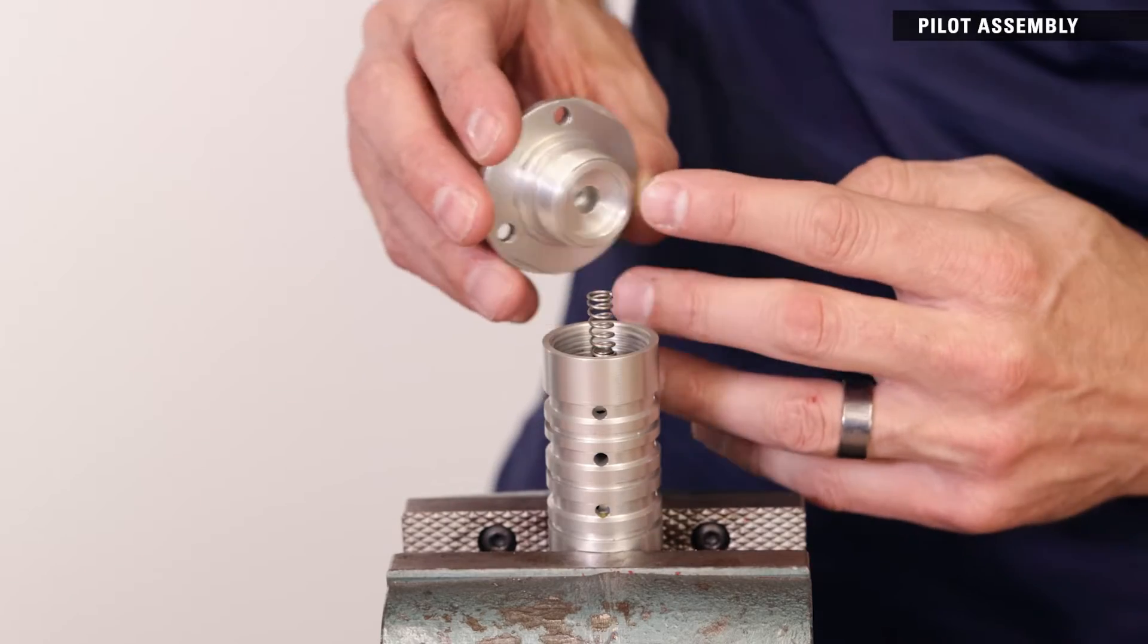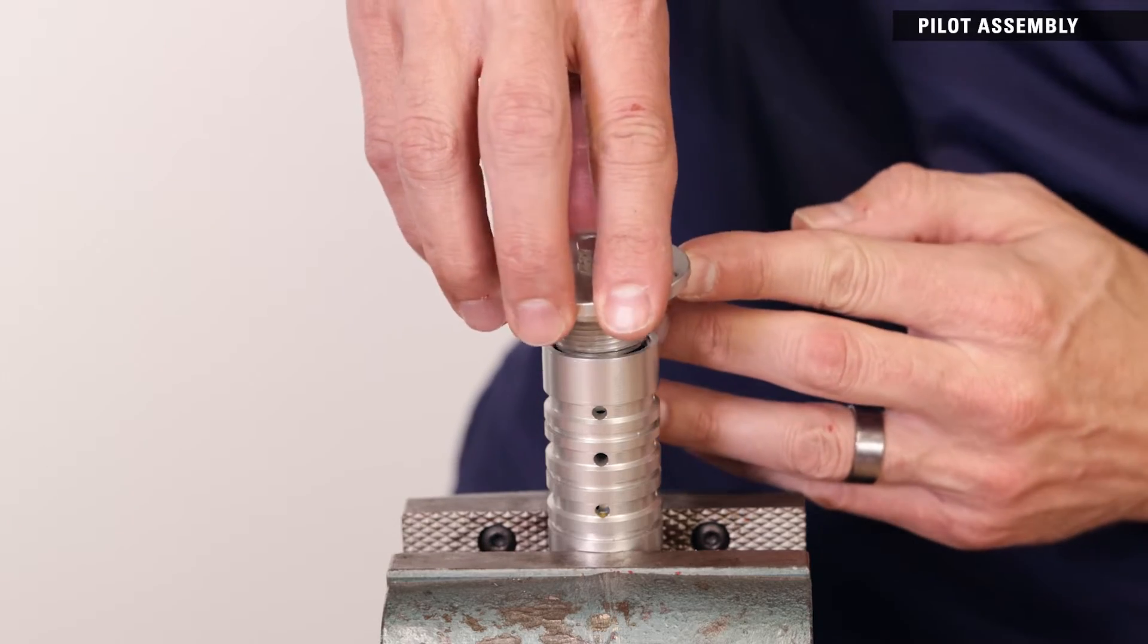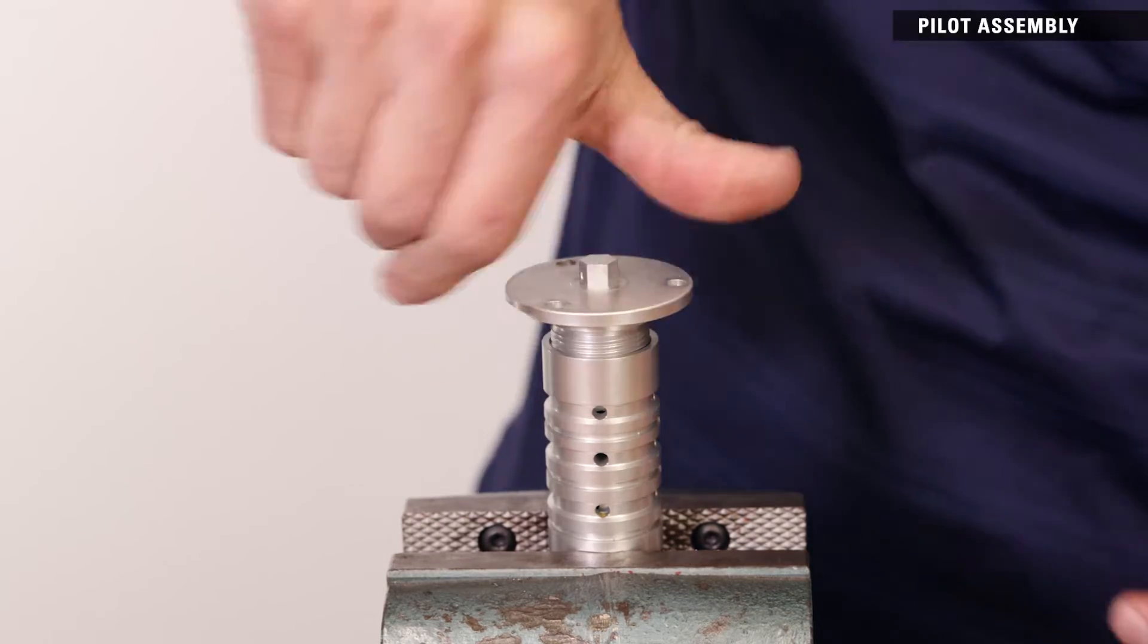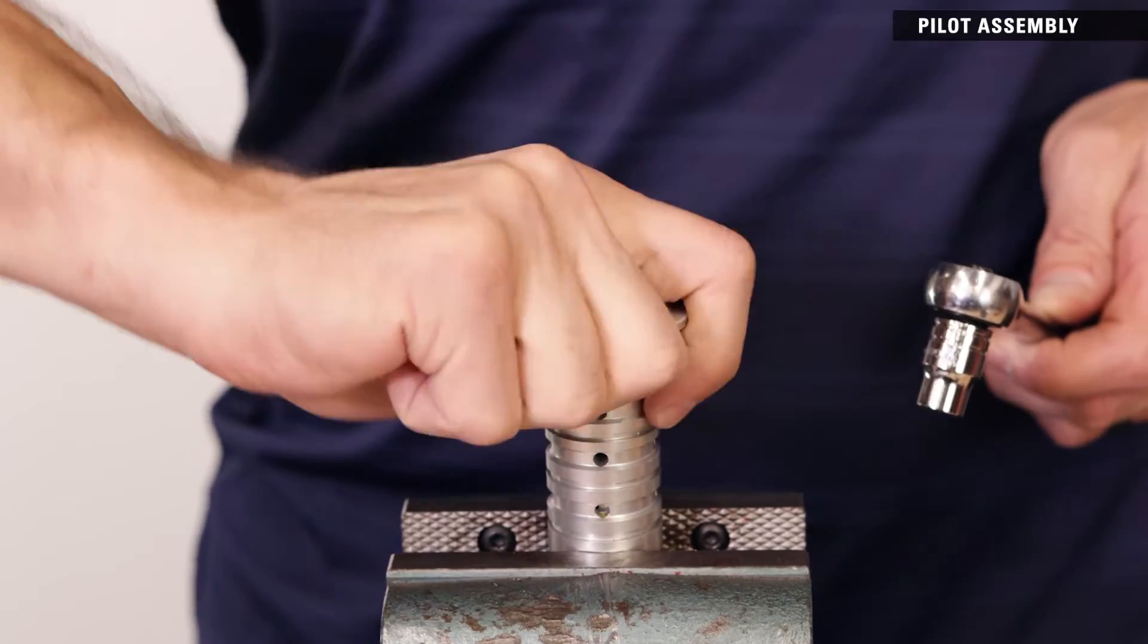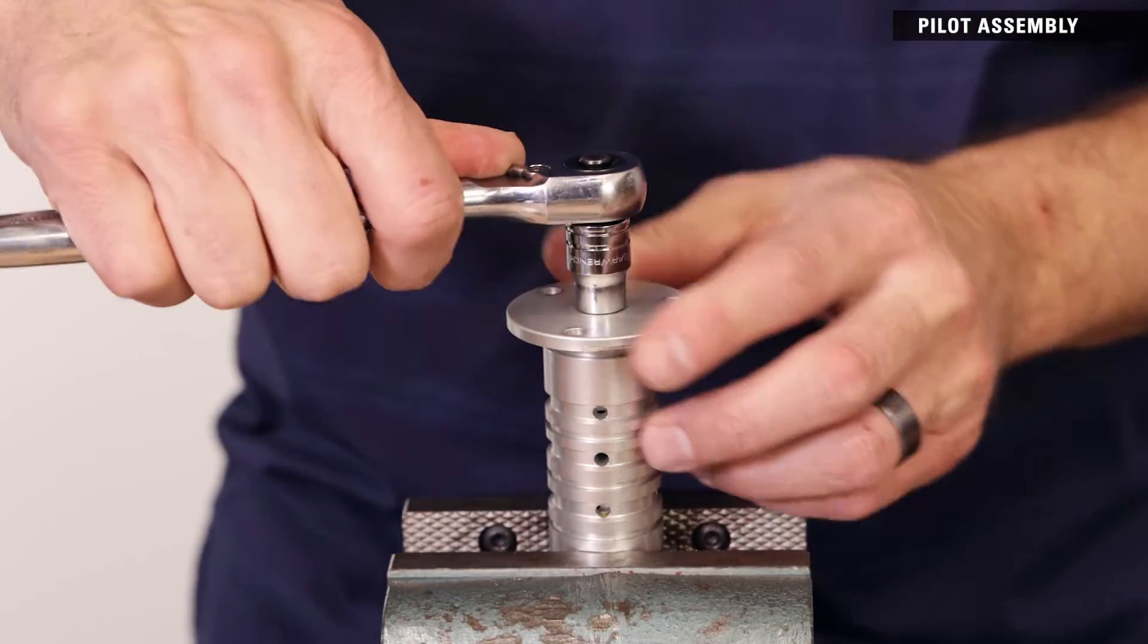With the spring centered in the hole, place the top cap on the pilot cartridge. Tighten by hand and torque to 25 to 30 inch pounds with a 3-8 inch socket.